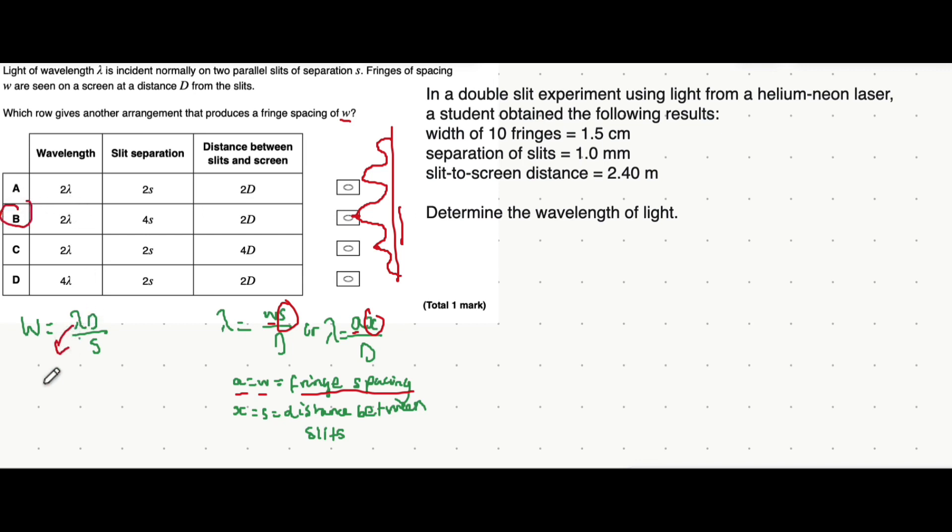That's because if you multiply the wavelength by 2 and multiply the distance between the slits and screen by 2, but then multiply the slit separation by 4, you get 2 times 2 is 4 over 4 is 1, so that ends up at lambda D over S again, giving you the same fringe spacing. So it's option B.